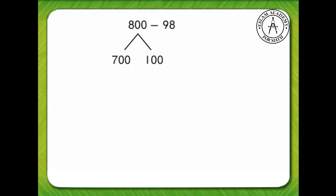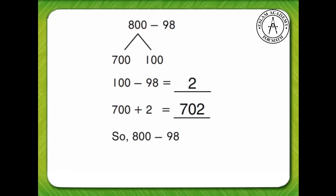It is easier to subtract 98 from 100 than 800. 100 minus 98 equals 2. 700 plus 2 equals 702. So, 800 minus 98 equals 702.